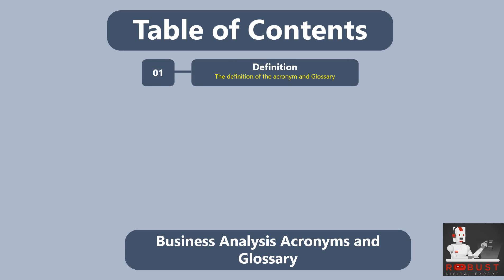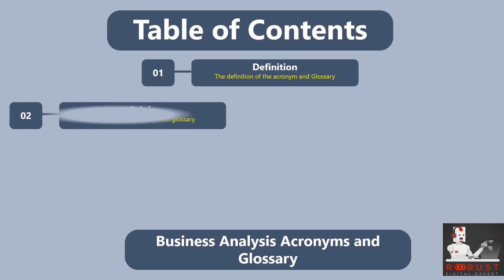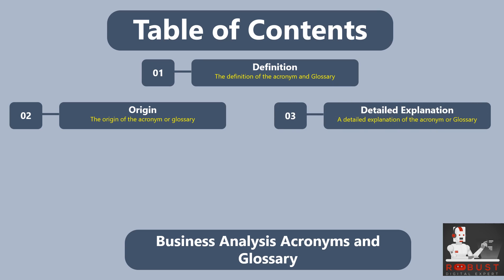Definition: We start by providing a clear and concise definition of the acronym or glossary term, highlighting its significance in the field. Origin: We discuss the origin or source of the term, providing relevant background information or historical context to help you understand how it emerged. Detailed explanation: We offer a thorough explanation, breaking it down into its constituent parts and explaining the meaning behind each element, elaborating on any specific terminology or concepts associated with the term.